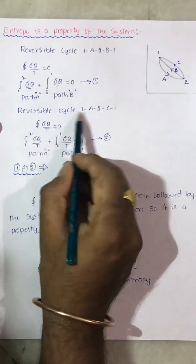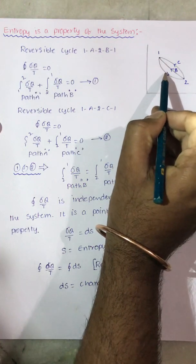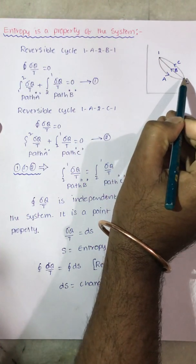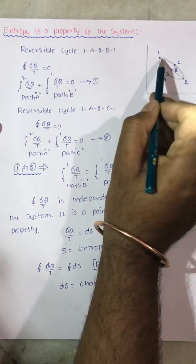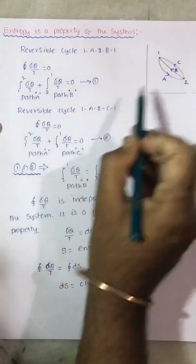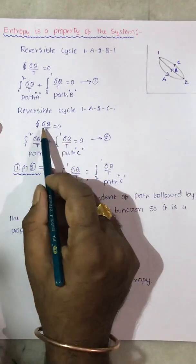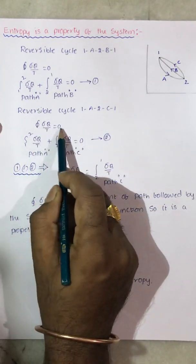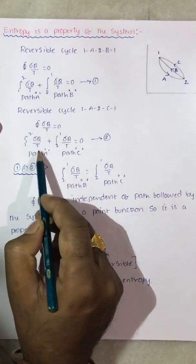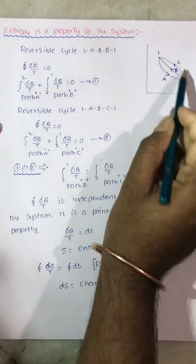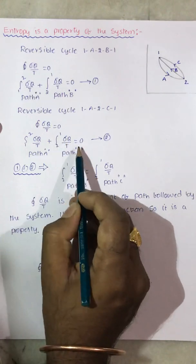Now let us consider another reversible cycle 1A2C1, where the system starts at 1, follows path A to reach point 2, and returns from point 2 to point 1 by following path C instead of path B. Similarly, for this reversible cycle, the cyclic integral of δq/T equals 0. So the integral from 1 to 2 of δq/T along path A, plus the integral from 2 to 1 of δq/T along path C, is equal to 0.